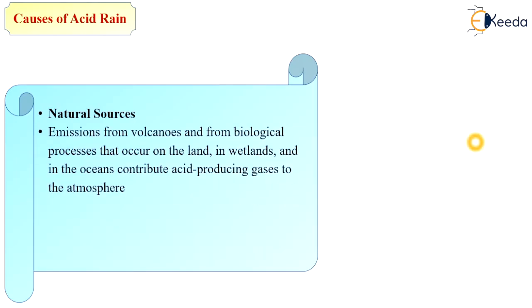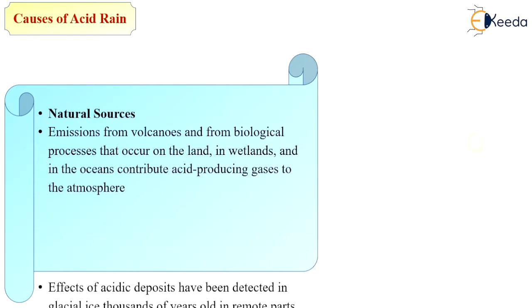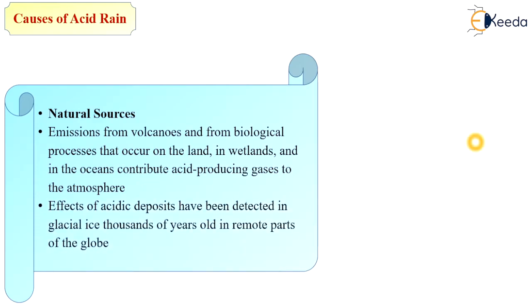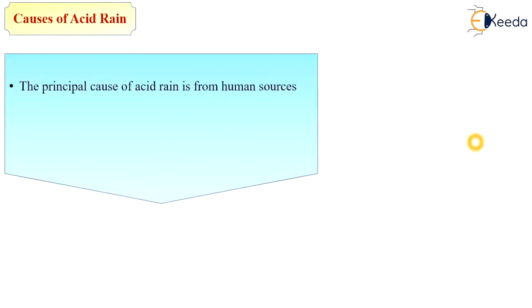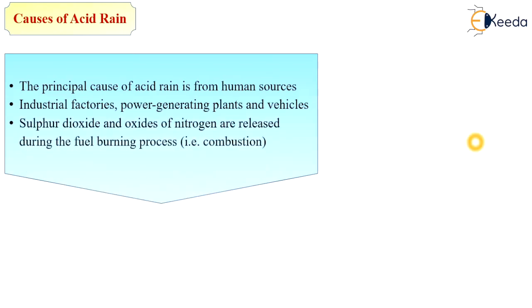Regarding natural sources of acid rain: emissions from volcanoes and from biological processes that occur on land, in wetlands, and in the ocean contribute acid-producing gases to the atmosphere. Effects of acidic deposits have been detected in glacial ice thousands of years old. The principal cause of acid rain, however, is from human sources — industrial factories, power-generating plants, and vehicles — where sulfur dioxide and oxides of nitrogen are released during fuel burning processes.